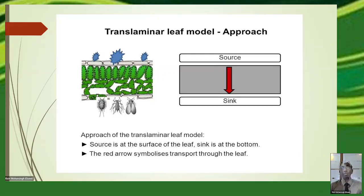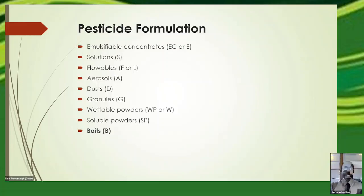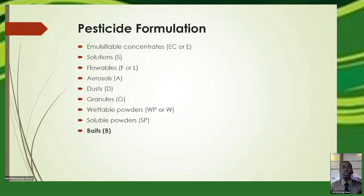You also need to know about the formulation of what you're buying — how it is made up. Formulations include emulsifiable concentrates, solutions, flowables, aerosols, dusts, granulars, wettable powders, and baits. Each formulation has different recommendations for mixing and application. Baits in particular are very popular but you need to know what bait you are using and how to apply it correctly — it's completely different from how you apply a fertilizer.